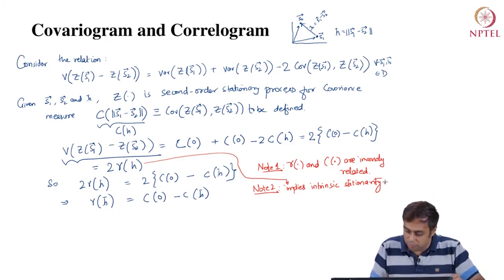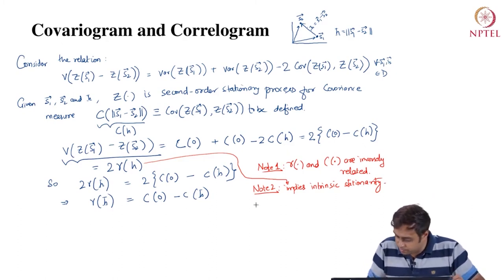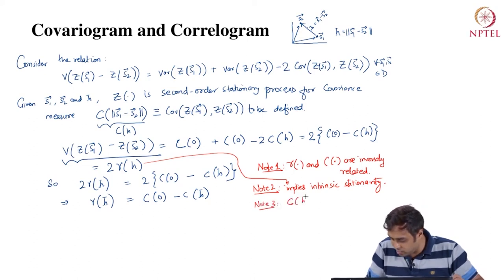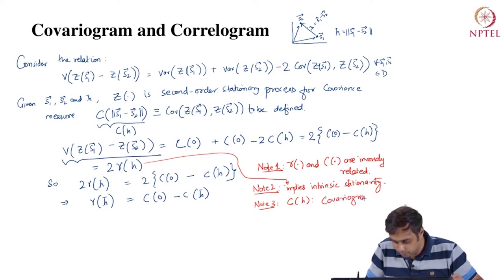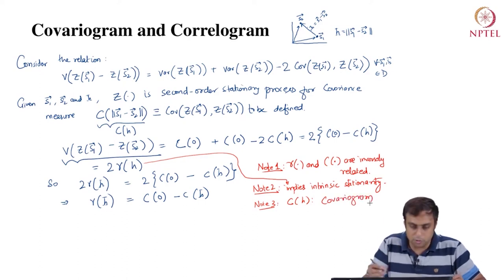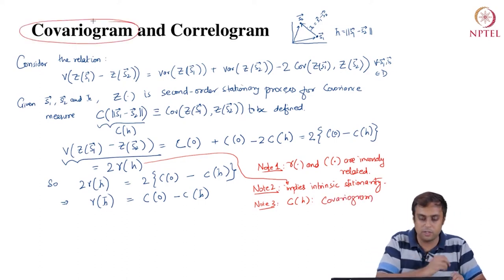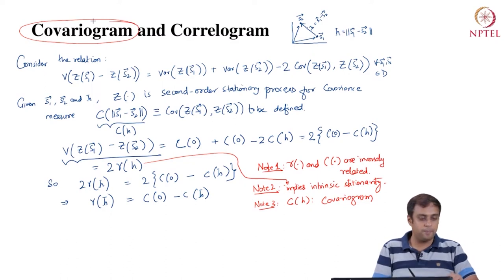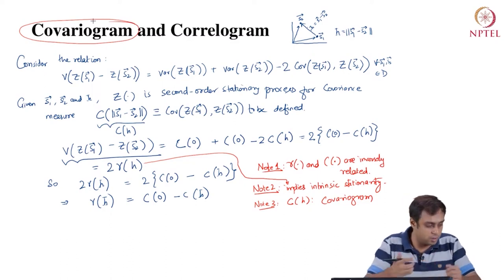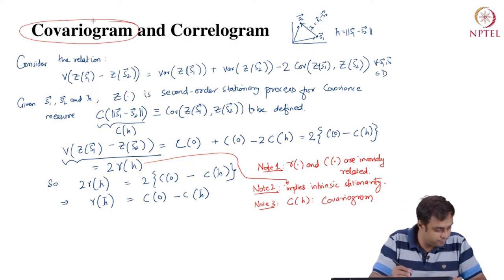C(H) is called the covariogram. We have solved one puzzle — we know what the covariogram is. Next, we will figure out what the correlogram is.